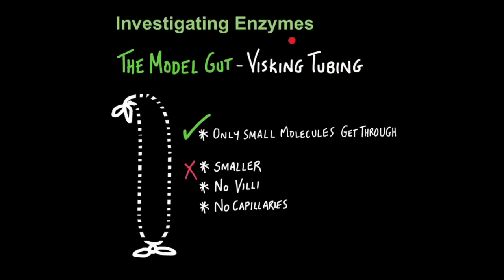Now let's look at how we can investigate enzymes. To do this, we can actually model the small intestine using visking tubing. A model is when we use an object to represent something else, so it can help us understand how it might work. Now visking tubing is a good representation for a small intestine because only small molecules can get through it. You see, it's semi-permeable. It's basically just a plastic tubing with pores in it. However, it's much smaller than the gut. It has no villi. It has no capillaries, so it's not perfect as a representation. So if you had to evaluate the model gut, this is what you could say.